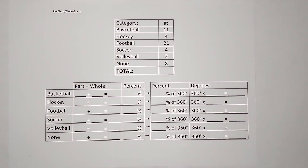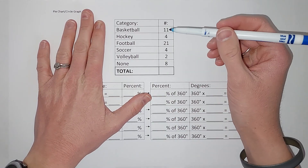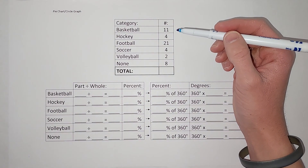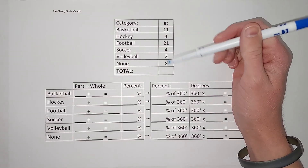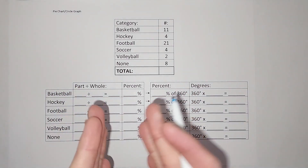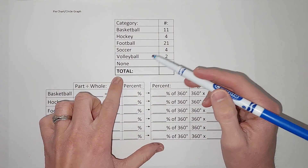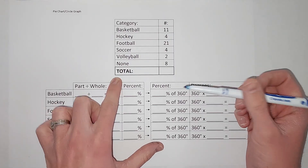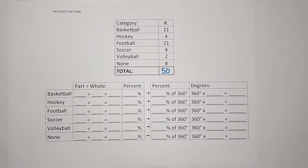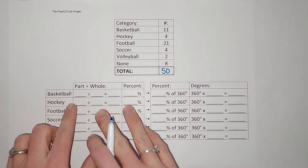Today we are going to make a pie chart, also called a circle graph. We've been given information from when I asked my students what their favorite sports were and these were the results. We have different numbers of students that like these sports. When making a circle graph, the whole purpose is to compare the pieces to the whole, so it's important to know our total. When we add all these together we get 50 — so 50 students participated in this survey.